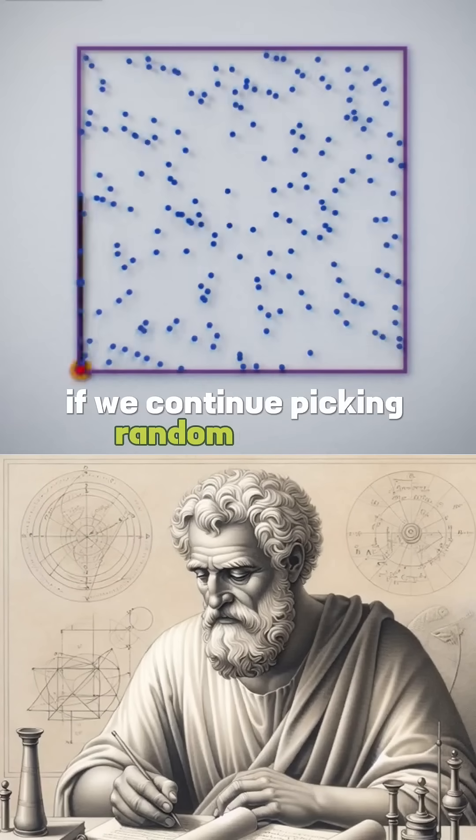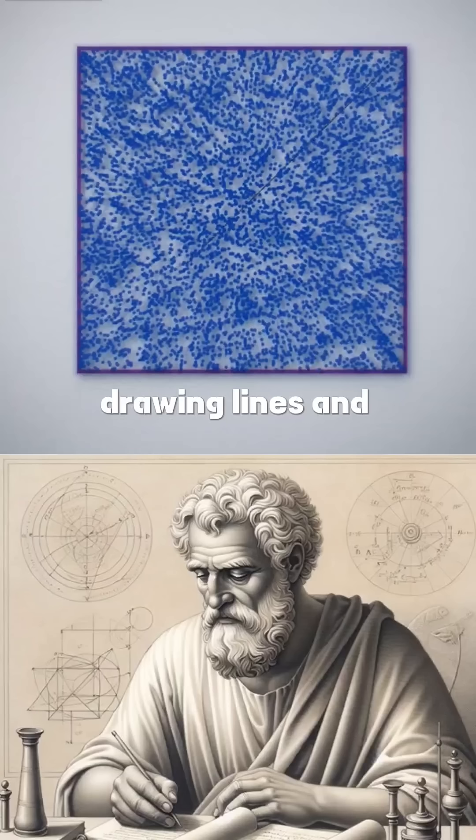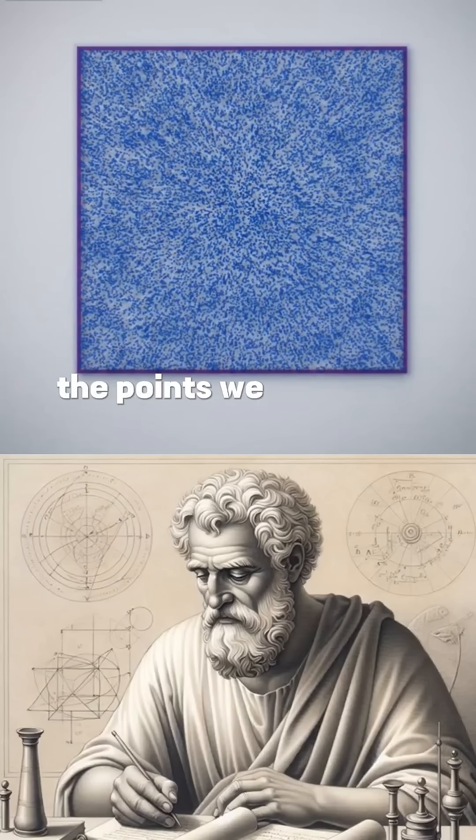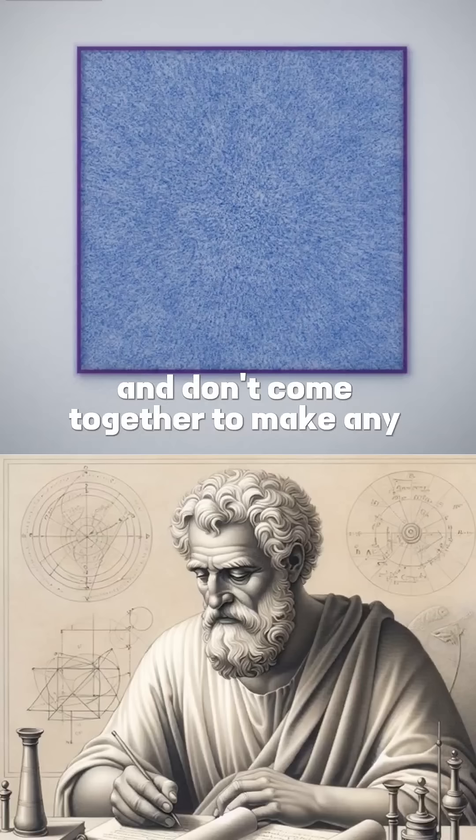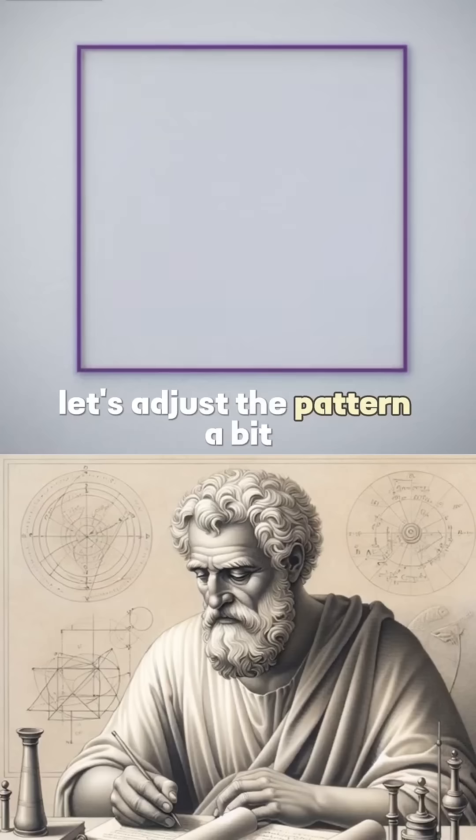If we continue picking random corners, drawing lines, and finding midpoints, the points we generate scatter evenly over the square and don't come together to make any kind of structure. Let's adjust the pattern a bit.